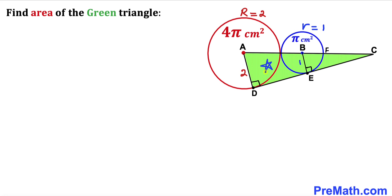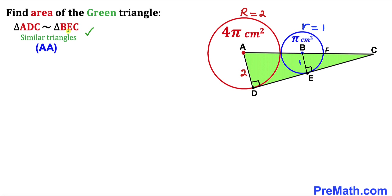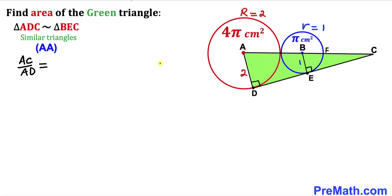Let's focus on two right triangles: the bigger right triangle ADC and the smaller triangle BEC. These two right triangles ADC and BEC are similar triangles according to the angle similarity theorem, since angle C is in common and both have 90-degree angles. Therefore we can write a proportion: AC divided by AD equals BC divided by BE.